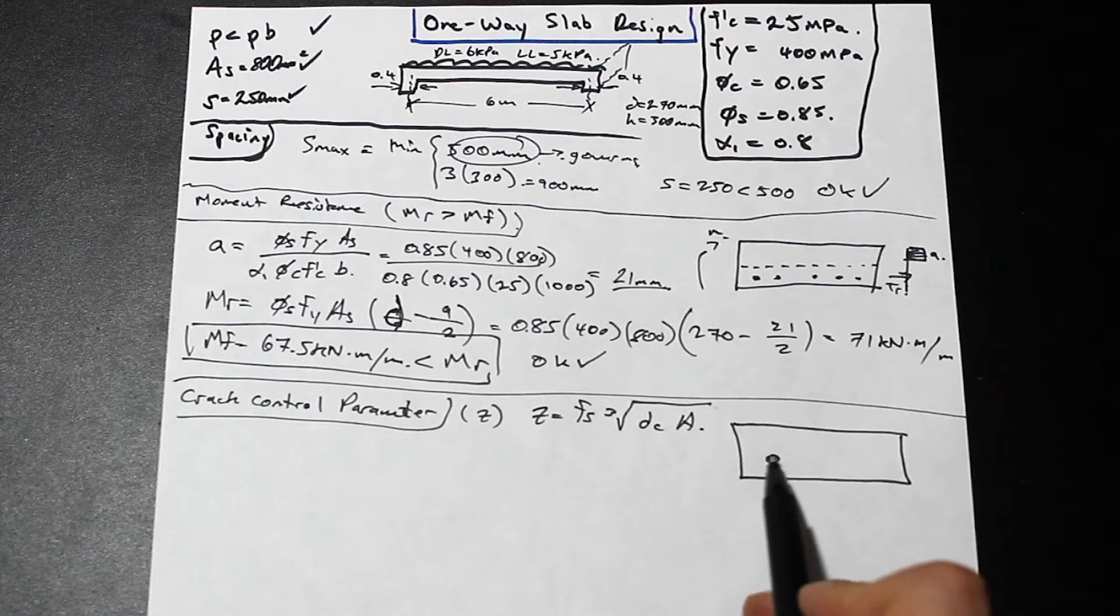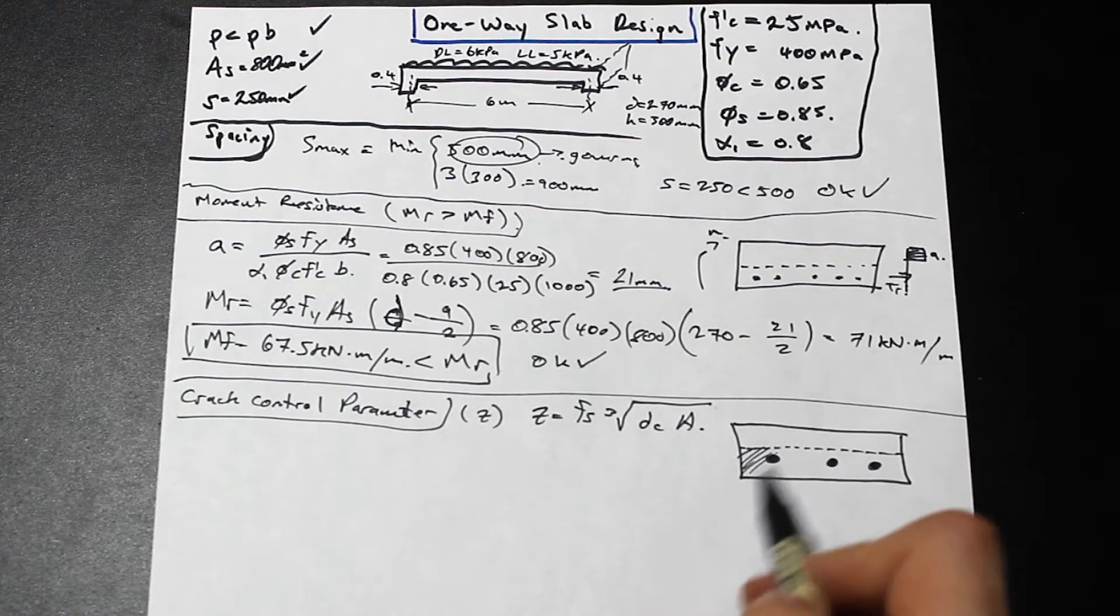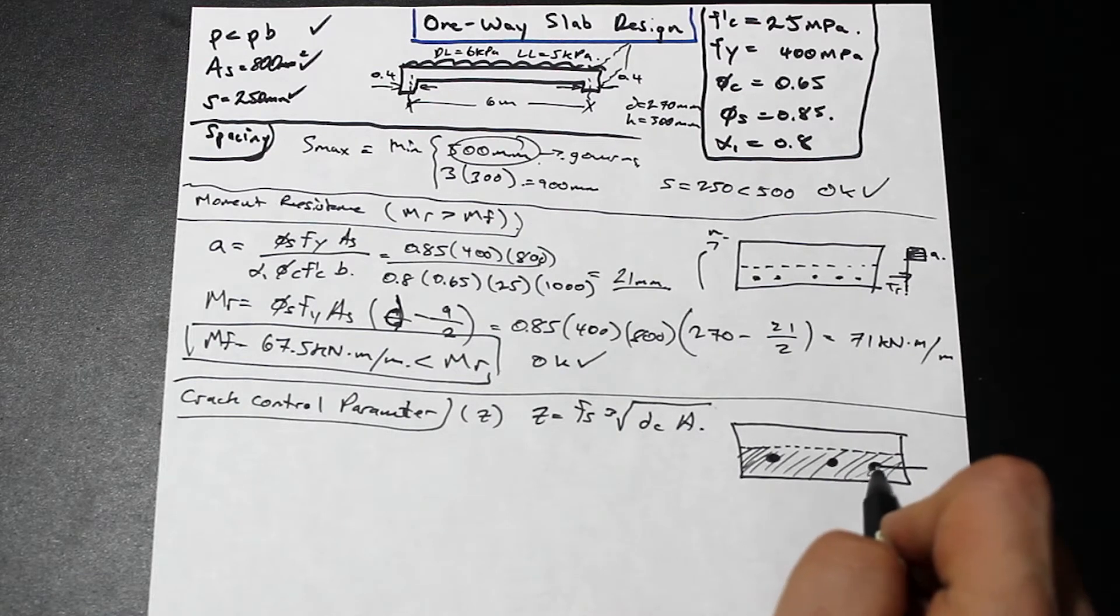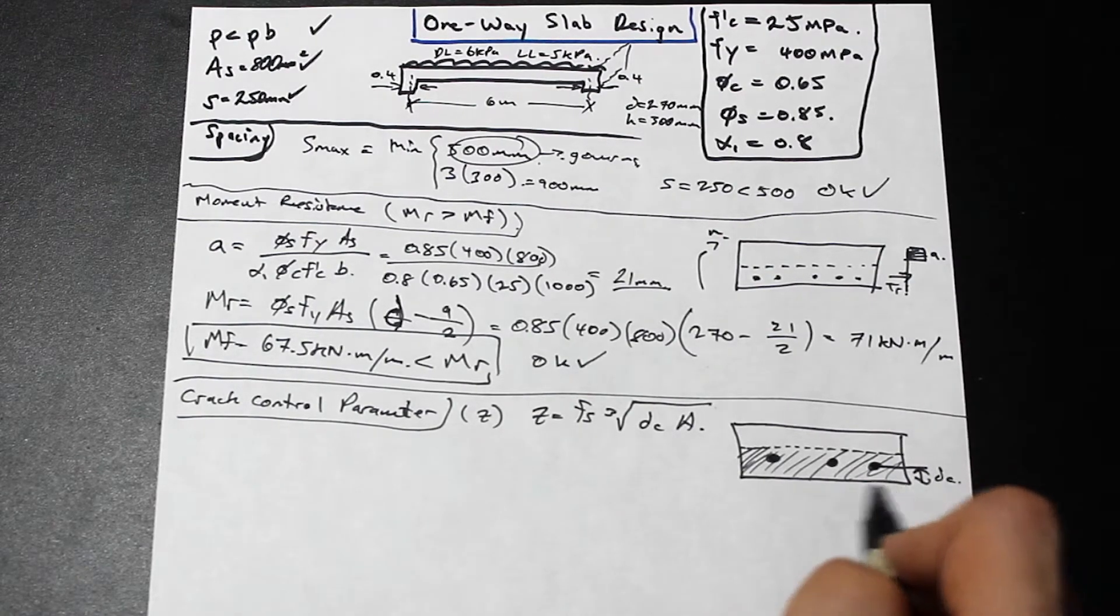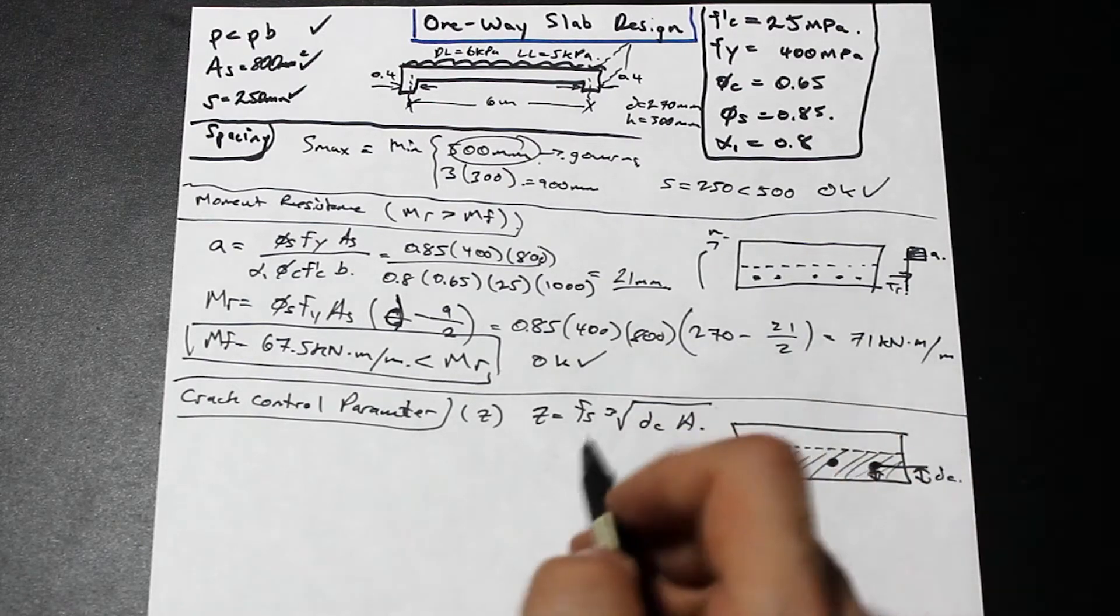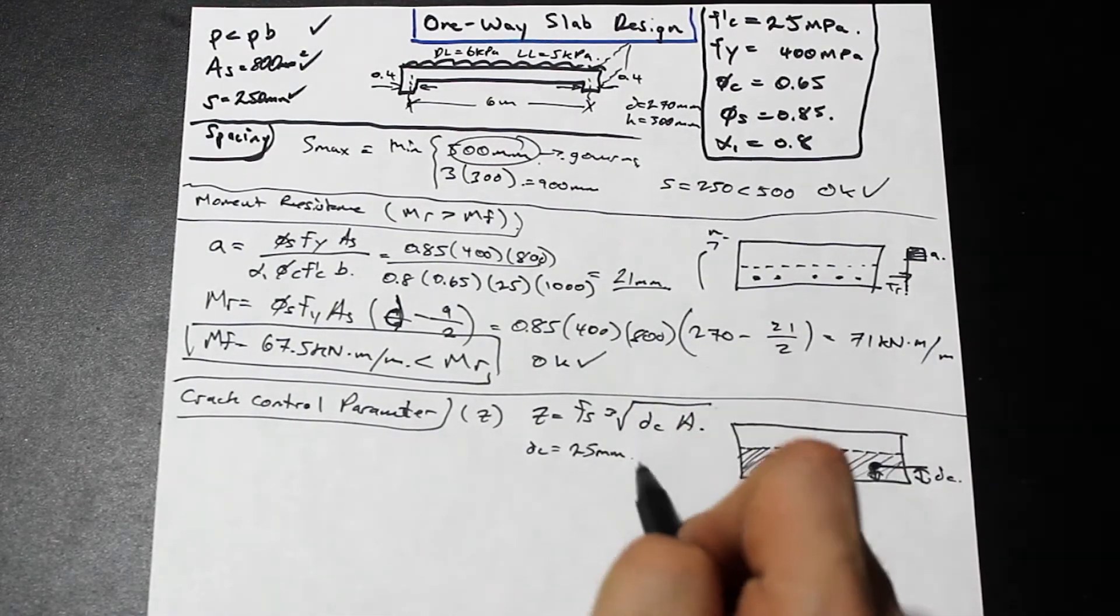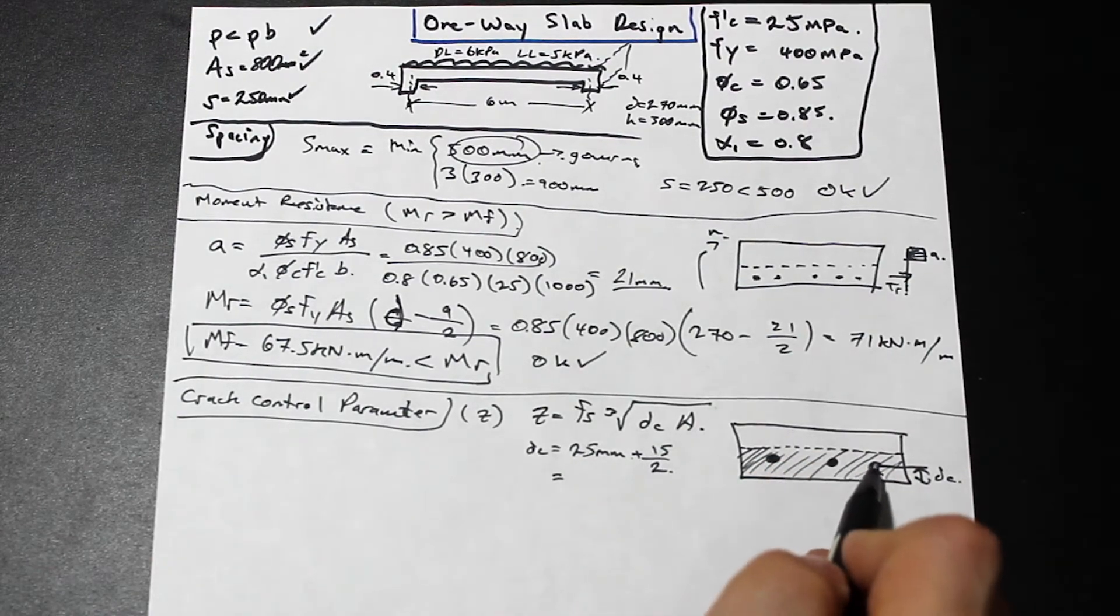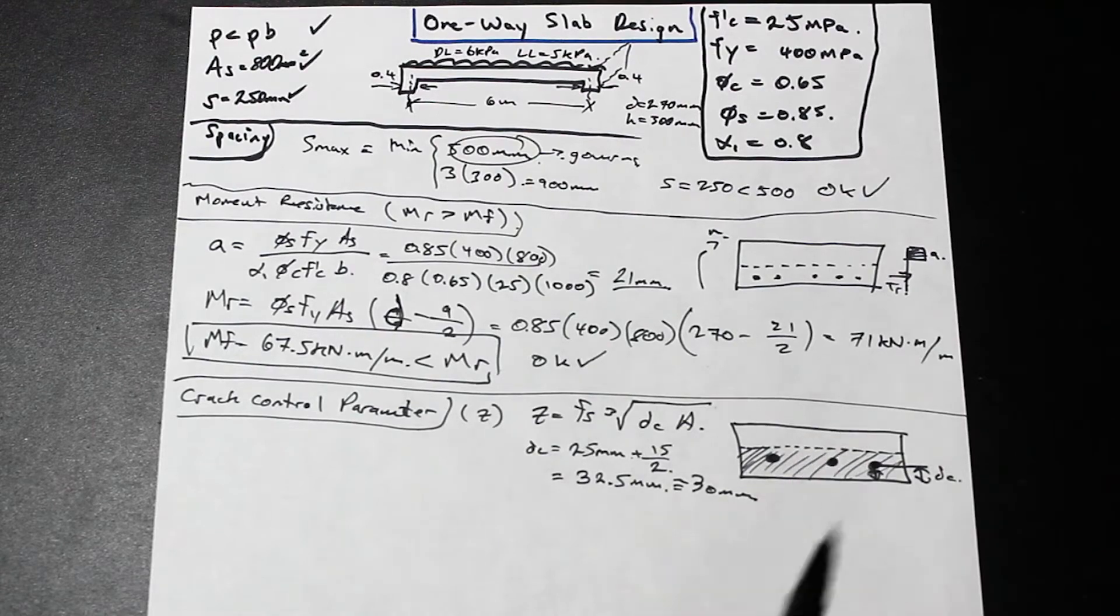I'm just going to draw a picture over here of our slab. Let's assume we have a few bars here. This area here, we'll assume to be our tension zone. dc is the distance from the center of the rebar, or the center of gravity of the rebar - in this case we only have one layer, so the center of gravity is just the center of the bar - to the bottom fiber of the tension zone. So in our case, it's simply just going to be the cover plus half of a bar size. Our cover is 25 millimeters from the last question, and that's going to be plus half a bar - we're using 15M for flexure. So our dc is simply going to be 25 plus 15, which is 32.5 millimeters. We'll say it's roughly 30 millimeters in our case.